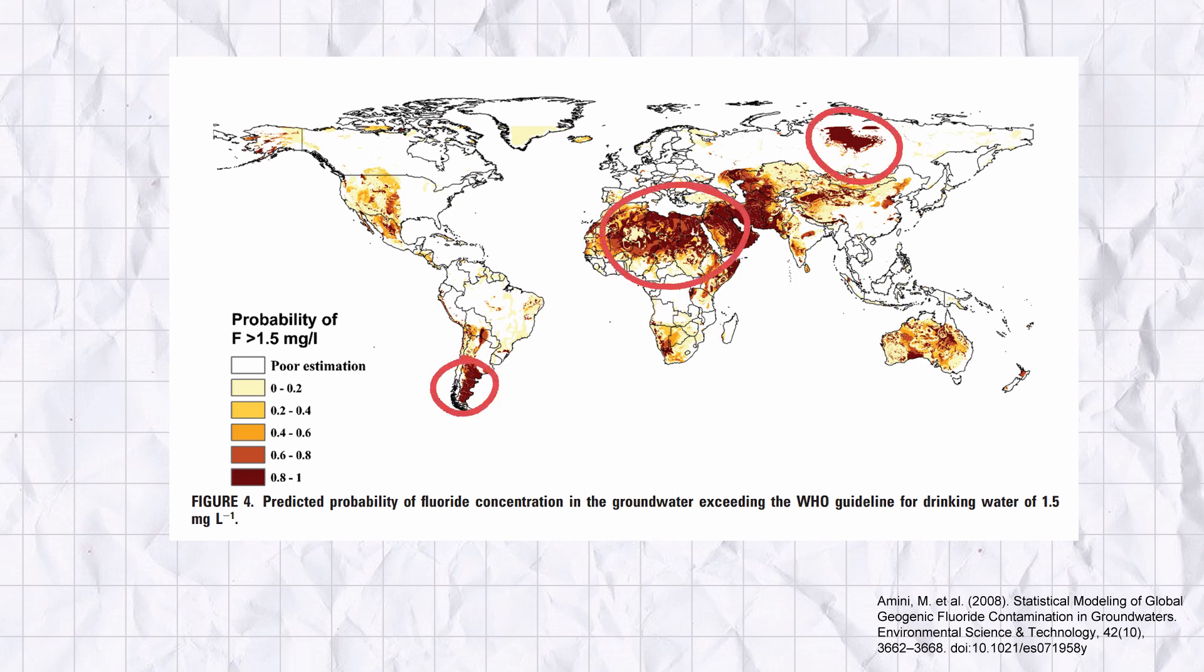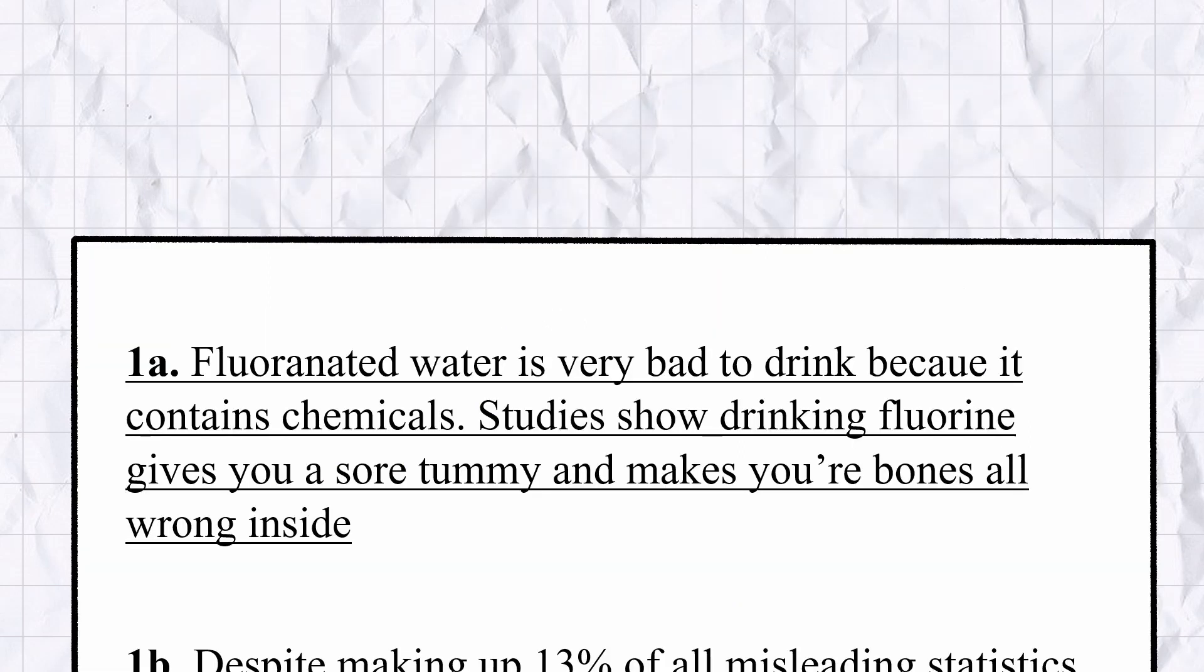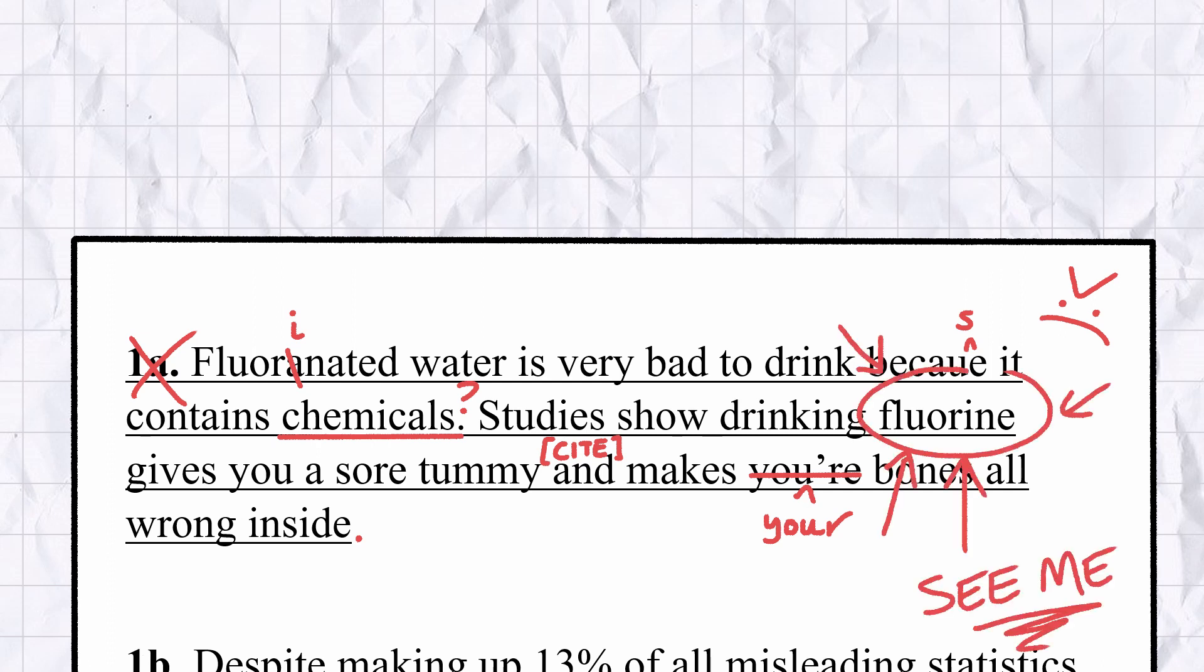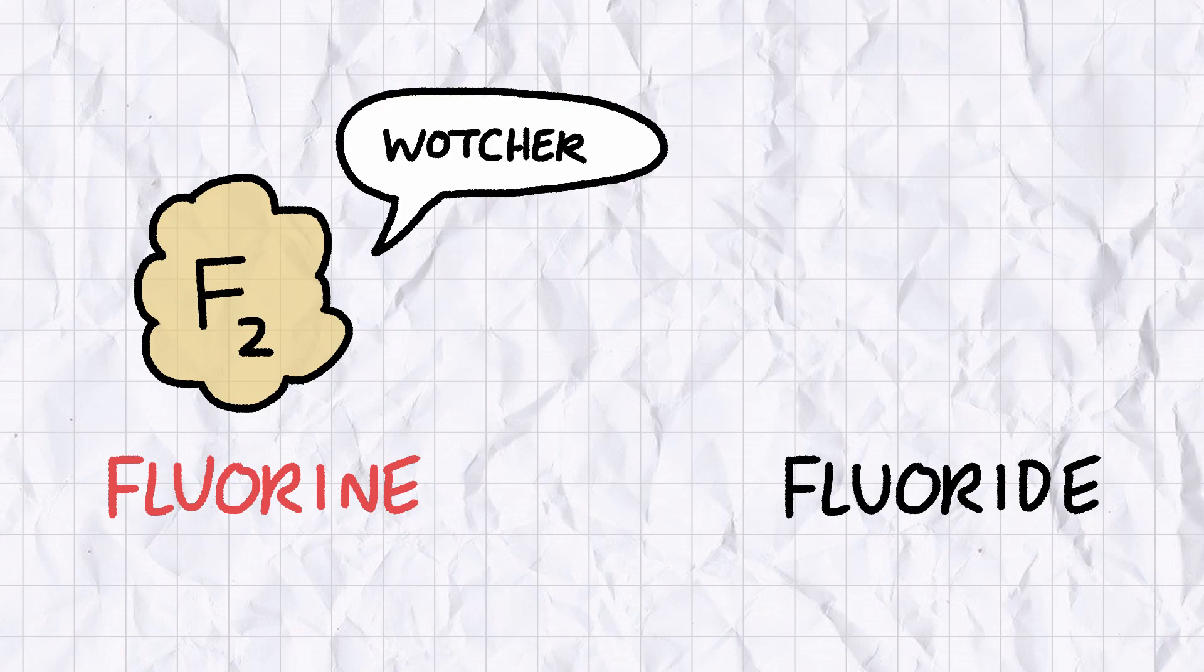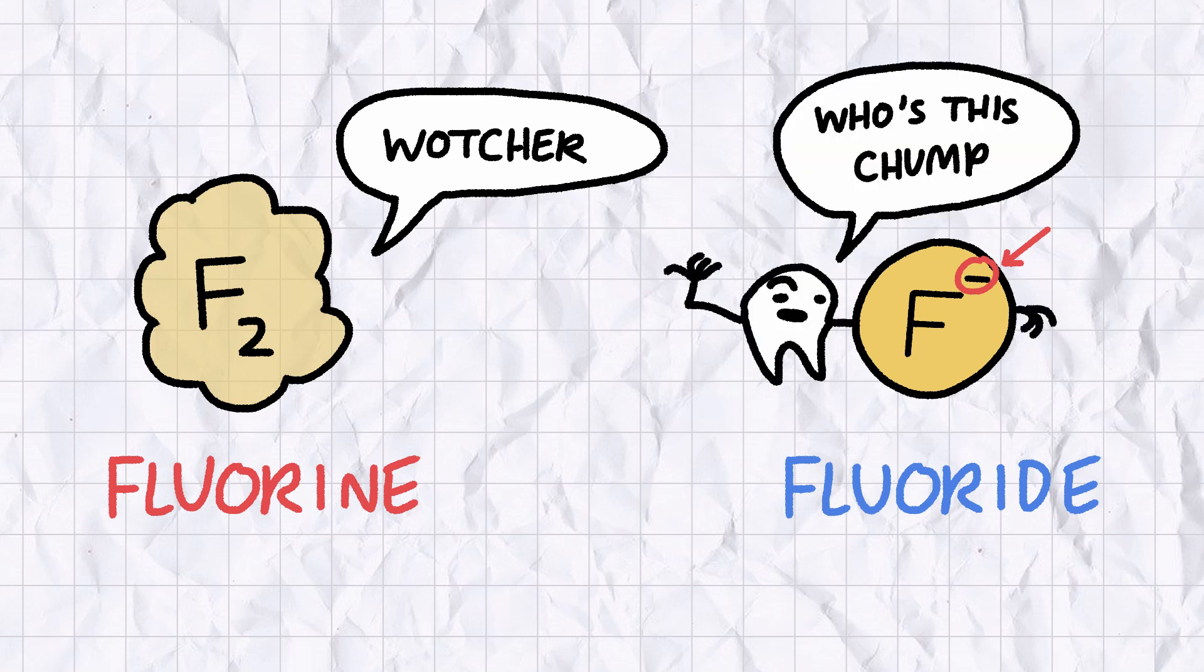Fluoride ions occur naturally in all drinking water, and in some parts of the world, particularly those that rely on groundwater, so-called natural water actually needs to have fluoride removed from it to make it safe to drink. Another habit of fluoride skeptics that would earn them a frowny face in the GCSE chemistry paper is that many of them use the terms fluorine and fluoride interchangeably. The one with an ene is an element and is a toxic yellow gas. The one with an eid refers specifically to F-minus ions and is the stuff you get in toothpaste. No, it's confusing, but hate the game, not the player.